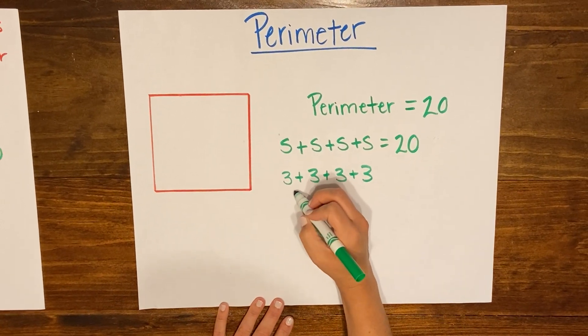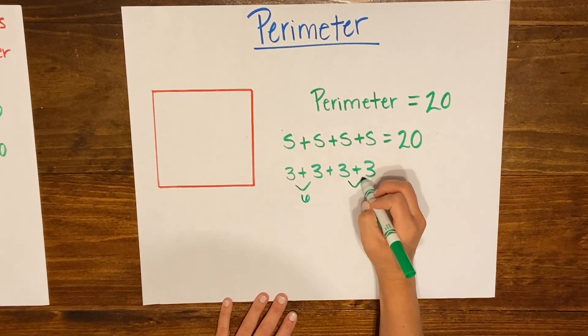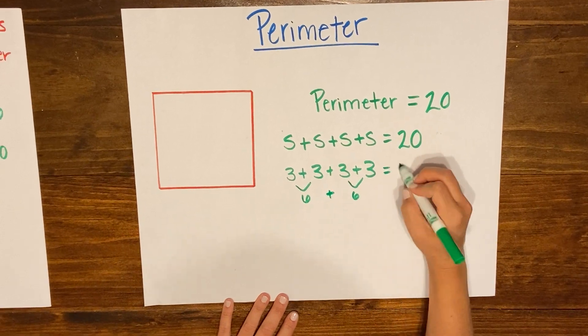Okay and then I know that 3 plus 3 is 6, 3 plus 3 is 6, and when I add those together I get 12.